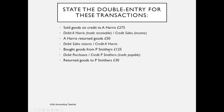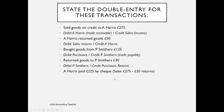If we then return goods to P Smithers: when we bought the goods we credited the P Smithers account to record the liability; returning goods reduces that liability, so we need to debit P Smithers and credit purchase returns — or returns outwards. That's the double entry: debit P Smithers, credit purchase returns.